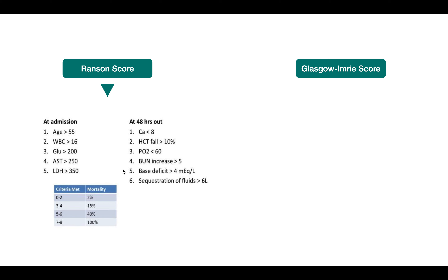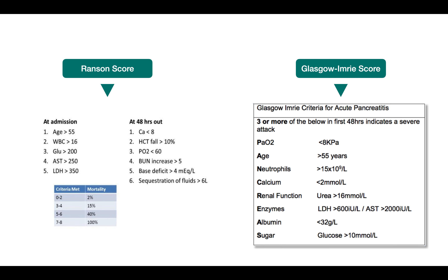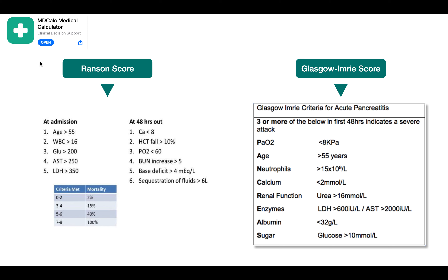The Glasgow Emery Score has the advantage of being usable at admission. A score of three or more is considered a severe attack requiring ICU admission. Rather than memorizing all these scores, you can download the MDCalc app, enter your data points, and it will determine whether the patient is mild, moderate, or severe.